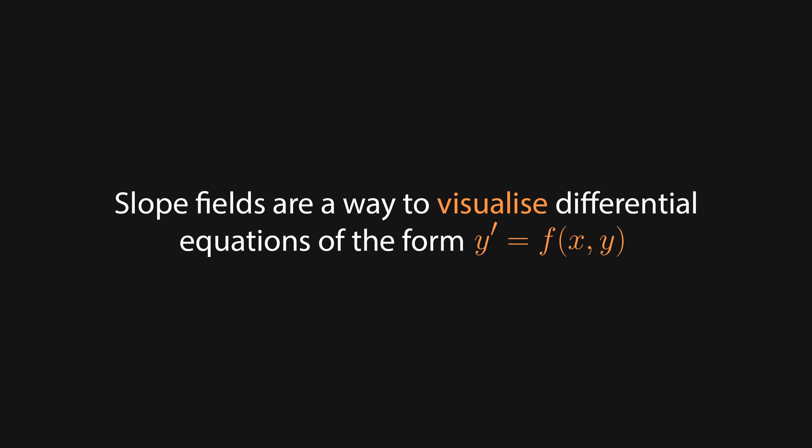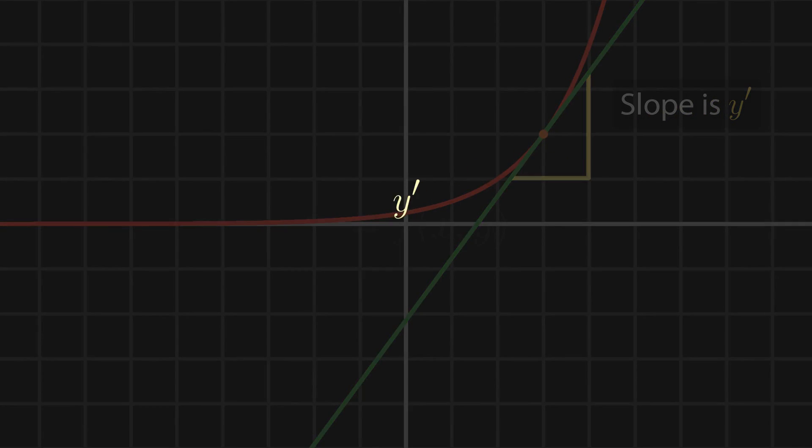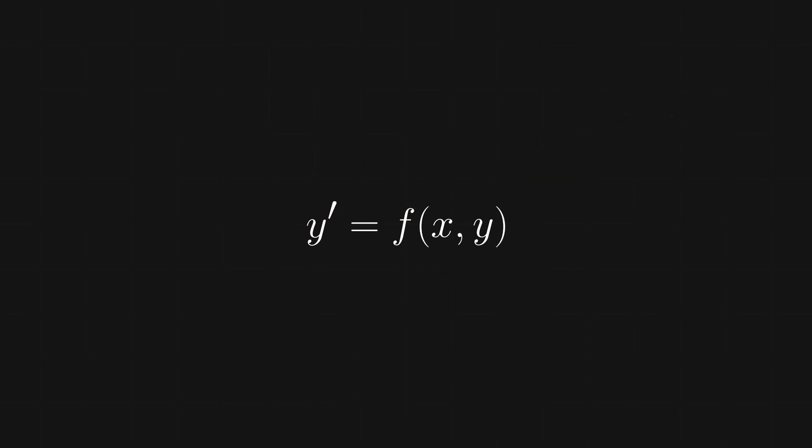Slope fields are a way to visualize differential equations of the form y' equals f of xy. Recall that the derivative of a function y represents the slope of a tangent line to the function. Here we're saying that at some point xy, the slope of the tangent line is equal to f of xy.